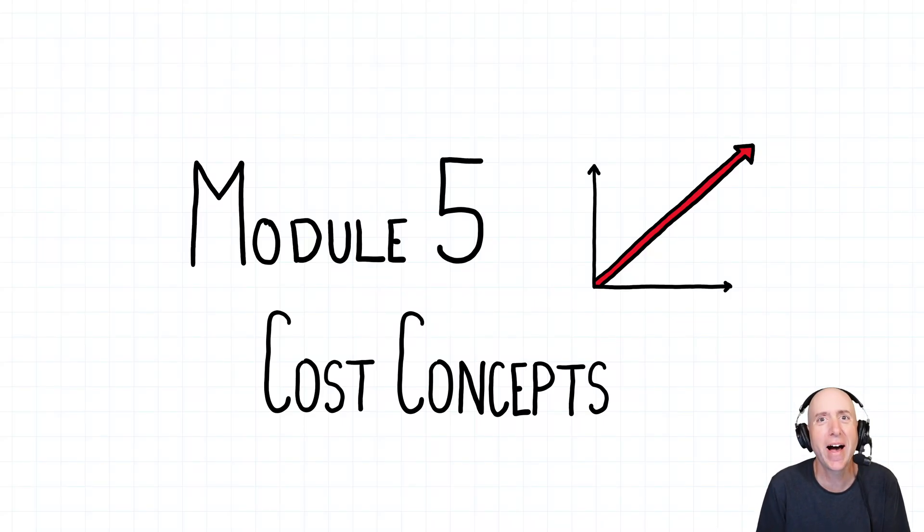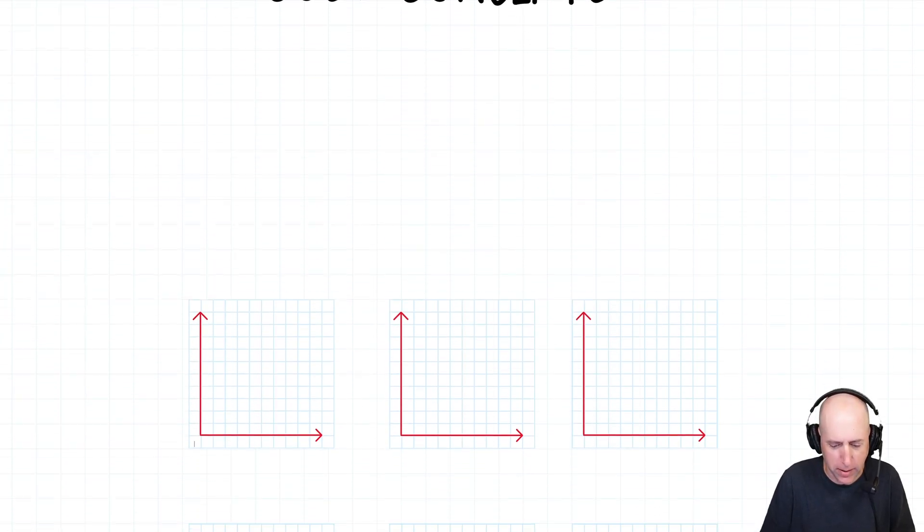Welcome to module five of our course in management accounting. This module is all about costs and understanding our costs. So far, the key concept has been material, labor, and overhead - that equals our product costs. Now we're going to talk about how costs behave in this chapter.